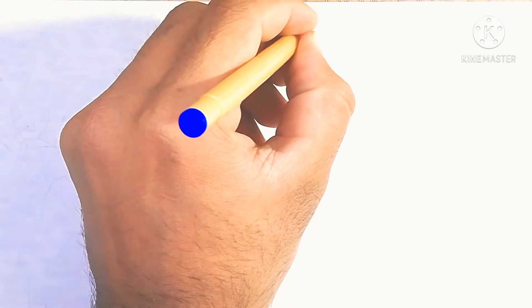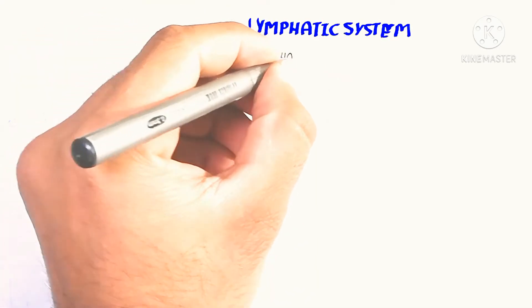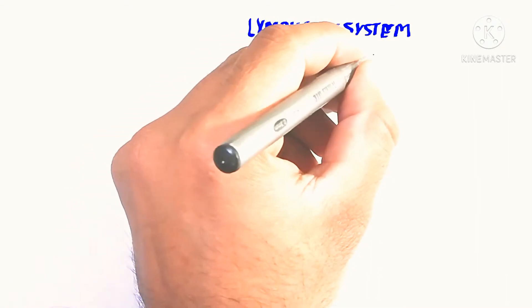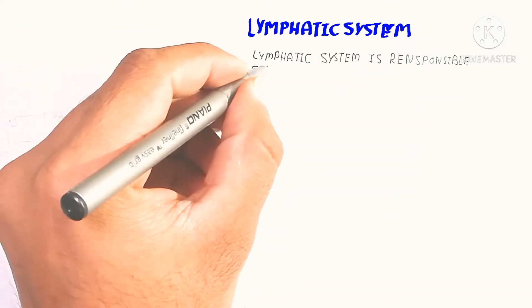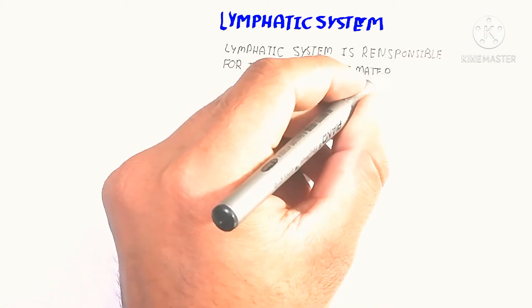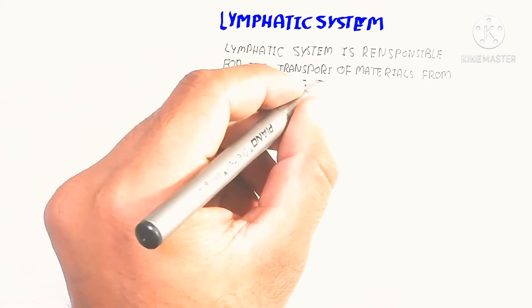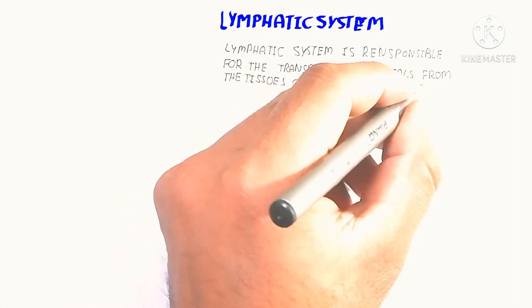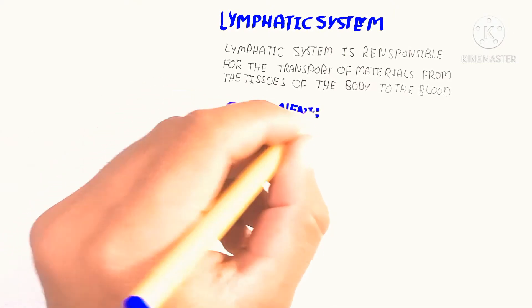Today we will discuss the lymphatic system. The lymphatic system is responsible for the transport of material from the tissues of the body to the blood. Tissue contains extracellular fluid and other excess fluid which is backed up into the lymphatic system and then into the circulatory system to maintain extracellular fluid homeostasis. Larger molecules also enter the lymphatic system to maintain protein, electrolyte, and acid-base balance.